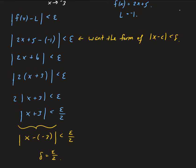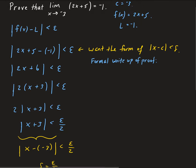Now we can do the formal write-up. To do the formal write-up, we just basically reverse our steps. We have to declare our values: we want epsilon to be greater than 0 — that is the opening statement of the formal definition — and we also want delta to be equal to epsilon over 2, which we just solved for.